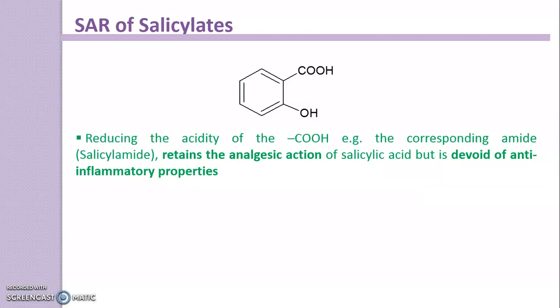Reducing the acidity of the COOH group — for example, the corresponding amide — retains the analgesic action of salicylic acid but is devoid of anti-inflammatory properties. An example is salicylamide. This structure is of salicylamide, which has good analgesic action but does not show any anti-inflammatory action.